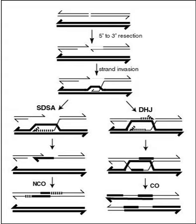During meiosis in eukaryotes, genetic recombination involves the pairing of homologous chromosomes. This may be followed by information transfer between the chromosomes. The information transfer may occur without physical exchange — a section of genetic material is copied from one chromosome to another without the donating chromosome being changed — or by the breaking and rejoining of DNA strands, which forms new molecules of DNA.